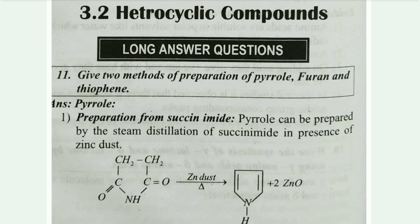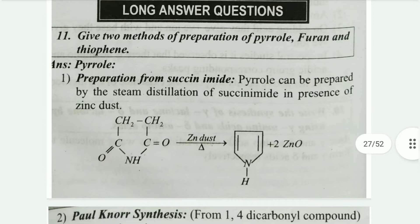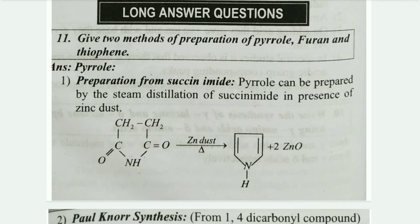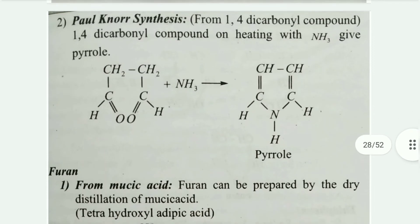For heterocyclic compounds: give two methods of preparation of pyrrole, furan, and thiophene. In the preparation, for pyrrole write one method, for furan write one, for thiophene write one — at least one each is confirmed. Make sure you write the question and answer properly — half the marks come from this.